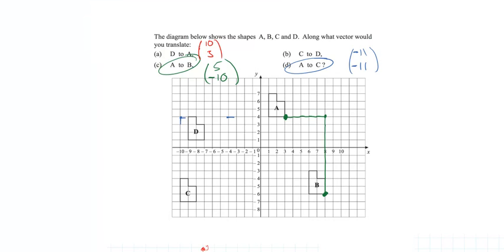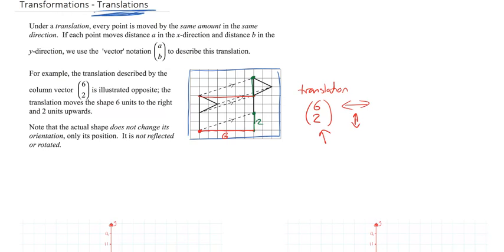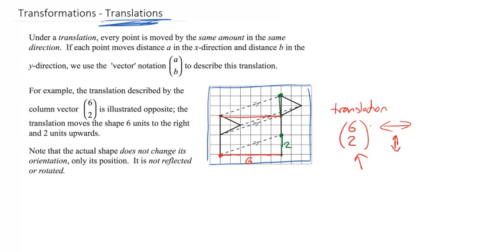Hopefully this has helped you to understand what a translation is. And it's just a movement. And we can define that movement using this thing called a column vector. I hope that's enough. I'm sure you can do the question.